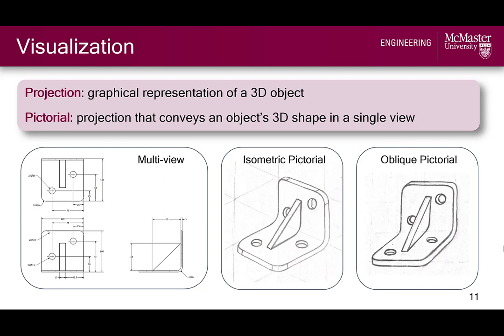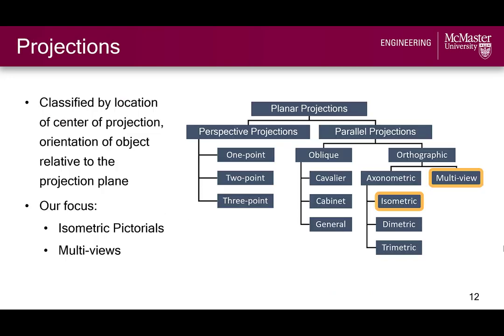As shown in this multi-view drawing of our L-bracket, as well as pictorials that convey the object's 3D shape in a single view. Such projections are categorized based on the location of the center of projection — that is, the location of the observer with respect to the object — as well as the orientation of the object with respect to the observer or the projection plane. In this course, we're going to focus on isometric pictorials and multi-view projections, which are subcategories of overall projections.